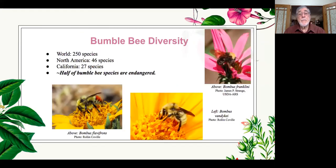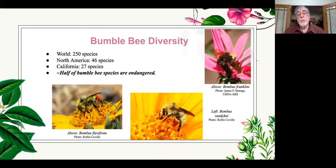About half of the bumblebee species are endangered, however. Worldwide we have about 250 species of bumblebees, 46 in North America, and 27 of these are in California. We're really worried about bees in general, but bumblebees in particular — about half of them are endangered. A lot of insects are actually declining, and this is a real worrisome aspect of our profession: what do we do about bees when they continue to decline and how do we get their numbers up?